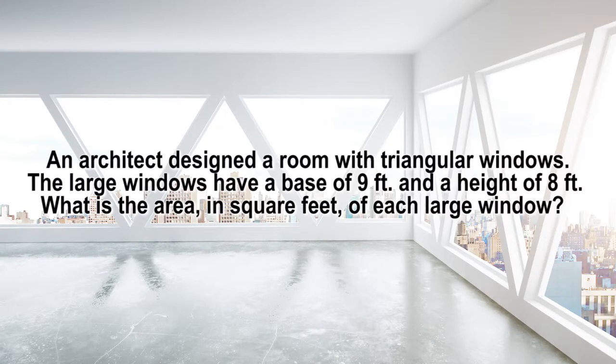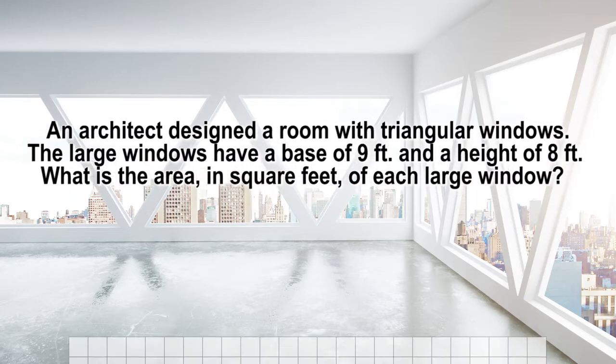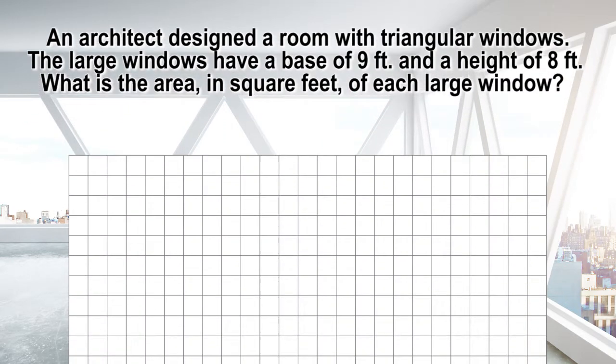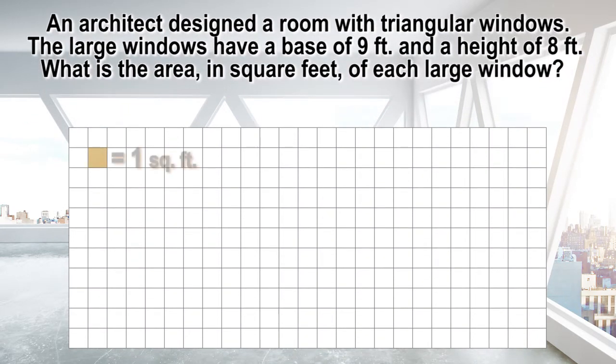An architect designed a room with triangular windows. The large windows have a base of 9 feet and a height of 8 feet. What is the area in square feet of each large window? Let's start by drawing the triangle on graph paper, where each square will represent 1 square foot.